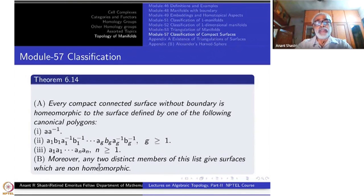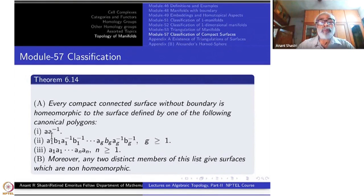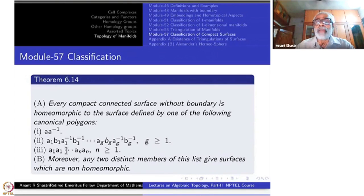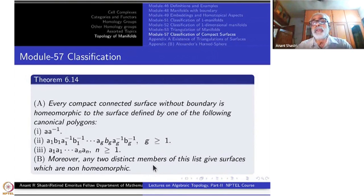The second part says any two distinct members of this list give you surfaces which are non-homeomorphic. When I say distinct members: AA⁻¹ is one single distinct member; in the second family there are infinitely many members indexed by g greater than or equal to 1; similarly in the third there are infinitely many members. Each one is different from every other within the list. Anything from family two will be definitely different from anything from family three, and even within family two, if g₁ and g₂ are different, the corresponding surfaces are different.